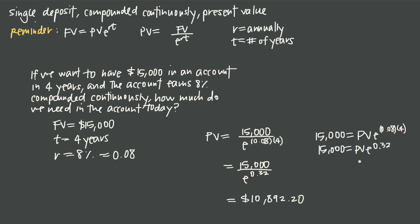We could divide both sides by e to the 0.32 and we'd get 15,000 over e to the 0.32 equals present value. Doing that on our calculator we would get the same value: present value equals $10,892.20.